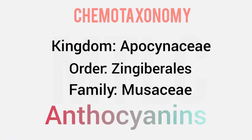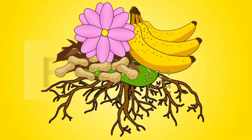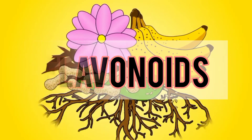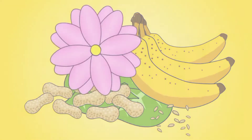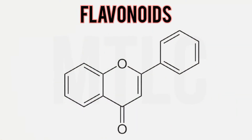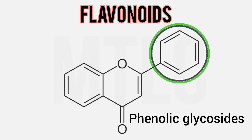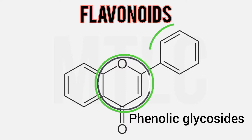We need a clear understanding of biological evolution and the plant. For example, flavonoids is a chemical fact. Flavonoids are phenolic glycosides — a benzene ring linked through a heterocyclic pyrene ring.